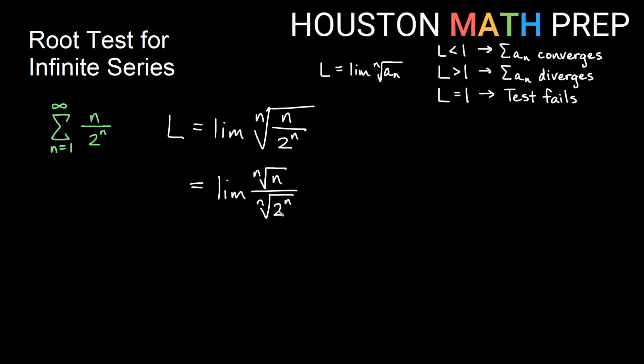Now on the bottom I think we can certainly see that an nth power and an nth root will reduce one another, especially since everything is positive there. So we'll have the limit of the nth root of n over just the number 2.